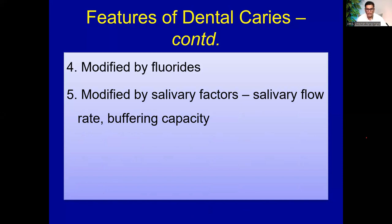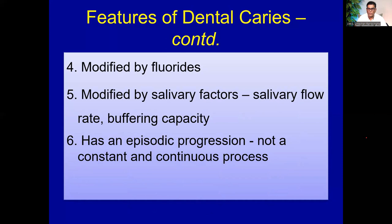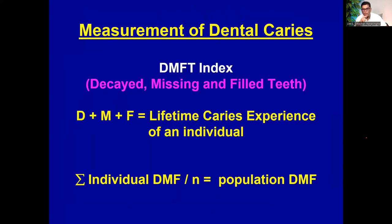The fifth feature of dental caries is that it is modified by salivary factors such as salivary flow rate and buffering capacity. If your salivary buffering capacity is good, your anti-caries activity is good. Caries also has an episodic progression, not a constant or continuous process. Caries is measured in populations using the DMFT index — decayed, missing, and filled teeth. We calculate decayed, missing, and filled teeth in one person and sum them up. This gives the caries experience of an individual, and for a population, we add all DMFT values and divide by the number of subjects.